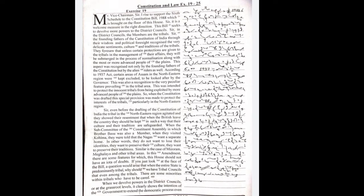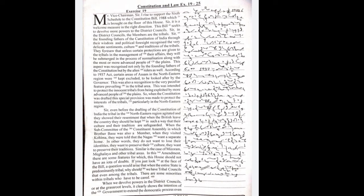This aspect was recognized not only by the founding fathers of the Constitution but by the alien rulers as well. According to the 1937 Act, certain areas of Assam in the northeastern region were kept excluded to be looked after by the Governor. This was also a recognition to the very peculiar feature prevailing in the tribal area. This was intended to protect the innocent tribals from being exploited by more advanced people of the plains.